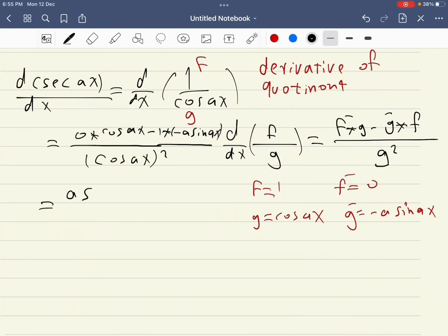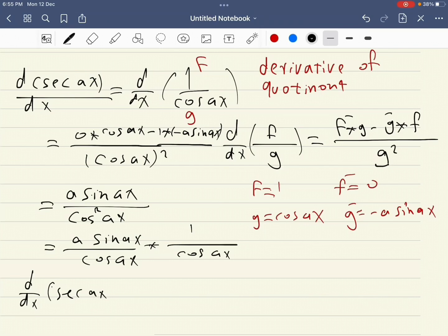We can also simplify this to a sine ax over cosine ax times one over cosine ax. Then d/dx of secant ax equals...